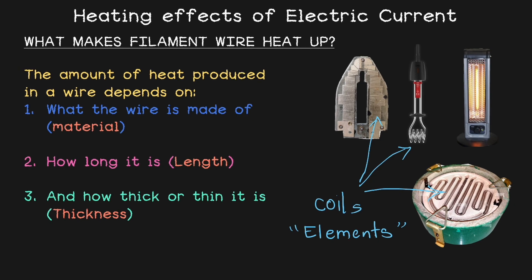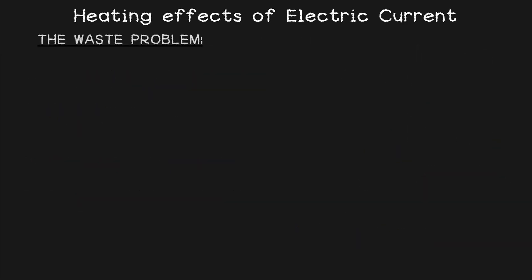We saw the benefits of the heating effect of electric current, but again there are also some downsides of it. For that let's go back to the bulb. When an incandescent bulb glows, a big part of the electricity it uses is wasted as heat and this is not ideal. So what's better?